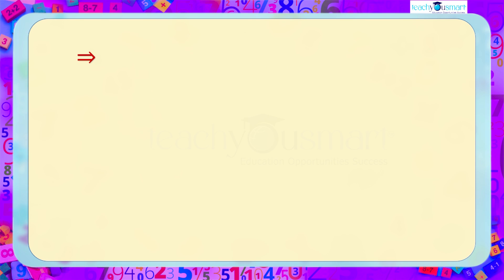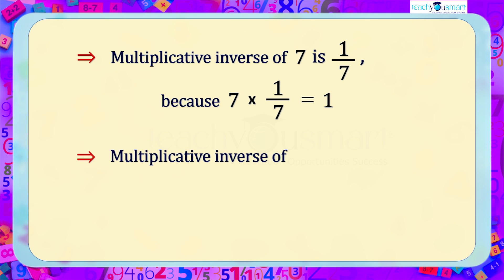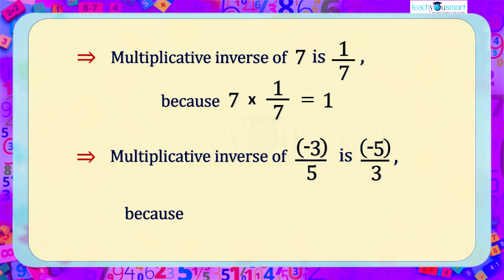For example, the multiplicative inverse of 7 is 1/7 because 7 multiplied by 1/7 equals 1. Similarly, the multiplicative inverse of -3/5 is -5/3, because -3/5 multiplied by -5/3 equals 1.